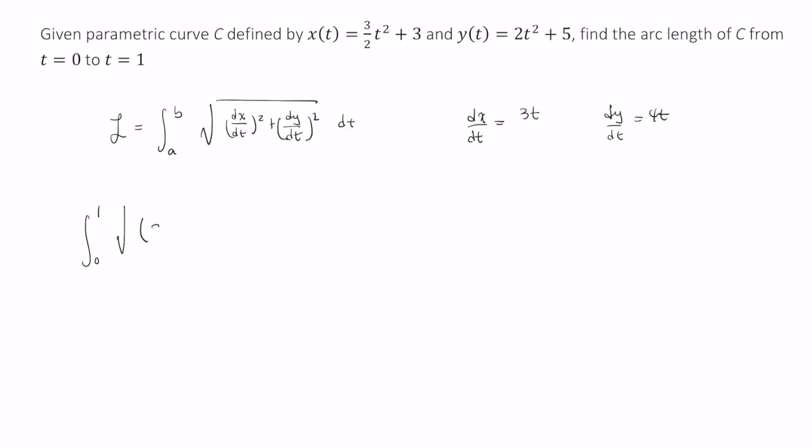So we have 3t squared plus 4, excuse me, 4t squared dt.